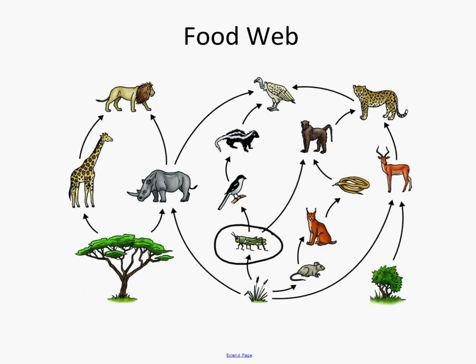If grasshoppers go away, all the things that eat them are going to struggle. Maybe a baboon population starts to decline because something it eats a lot of goes away. Now baboons aren't there to eat snakes, and snakes aren't there to eat cats. Taking a piece of the puzzle out of the food web affects the entirety of that food web, helping us understand the whole ecosystem.